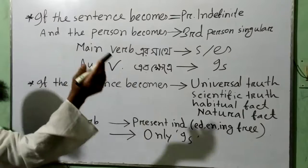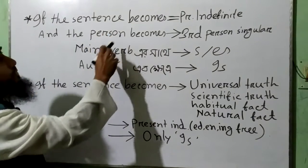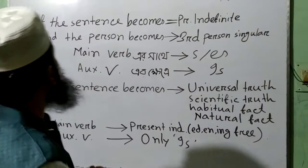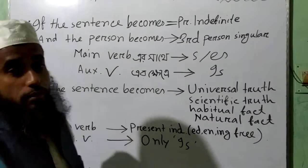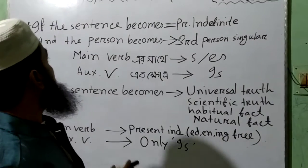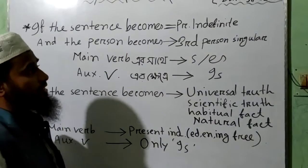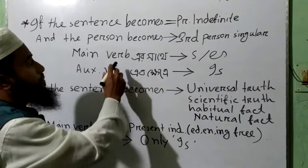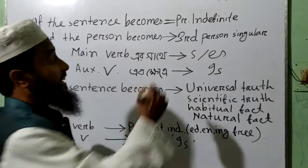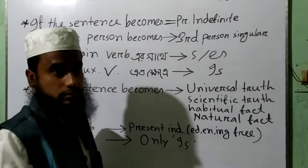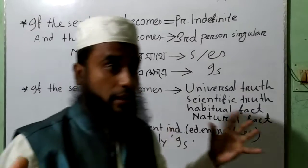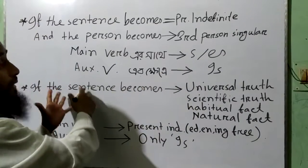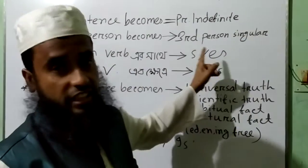Now, if the sentence becomes present indefinite — this is the starting point. If the sentence becomes present indefinite and the person becomes third person singular, then with the main verb we shall have to add 's' or 'es'. But in respect of auxiliary verb, not 's' or 'es'.